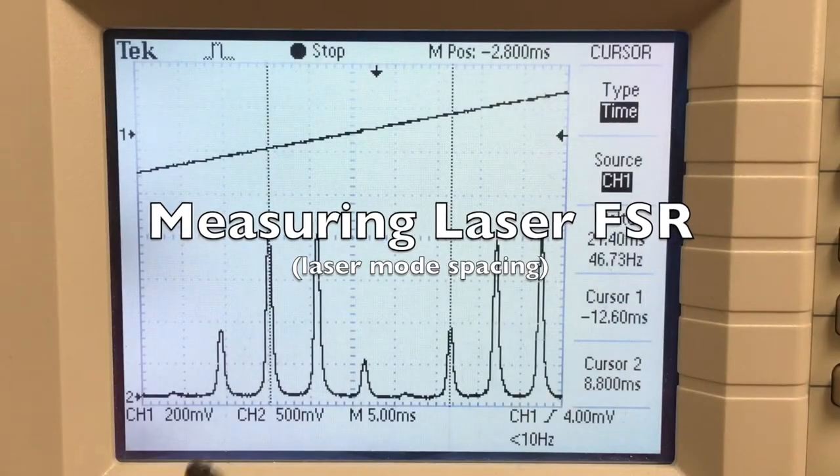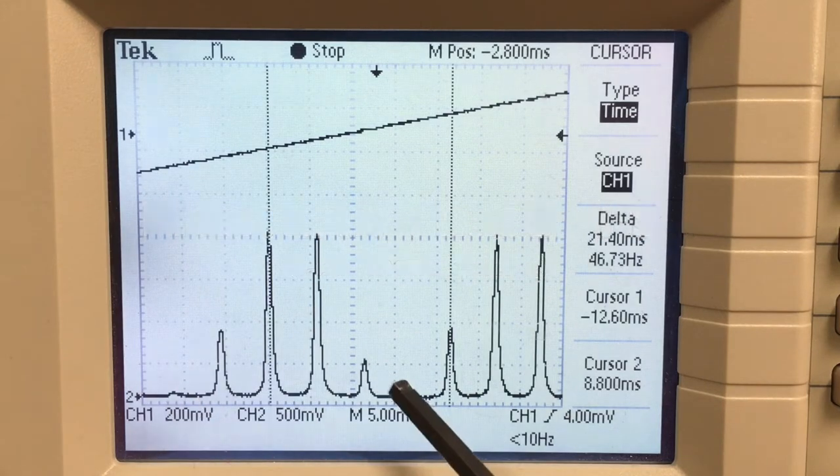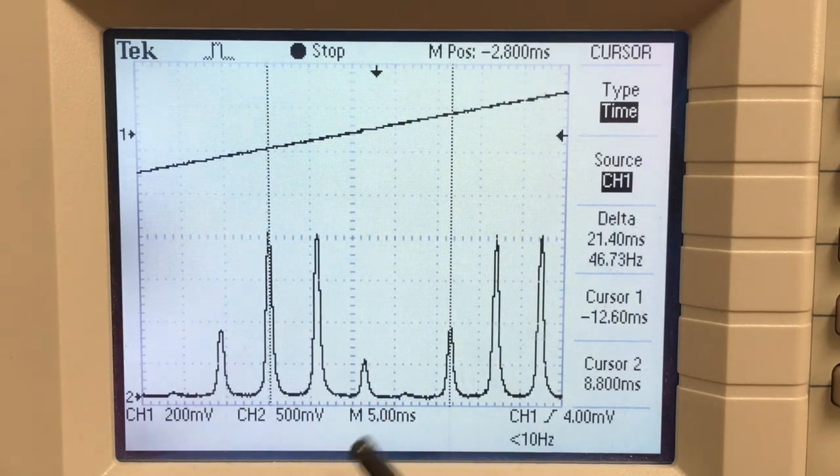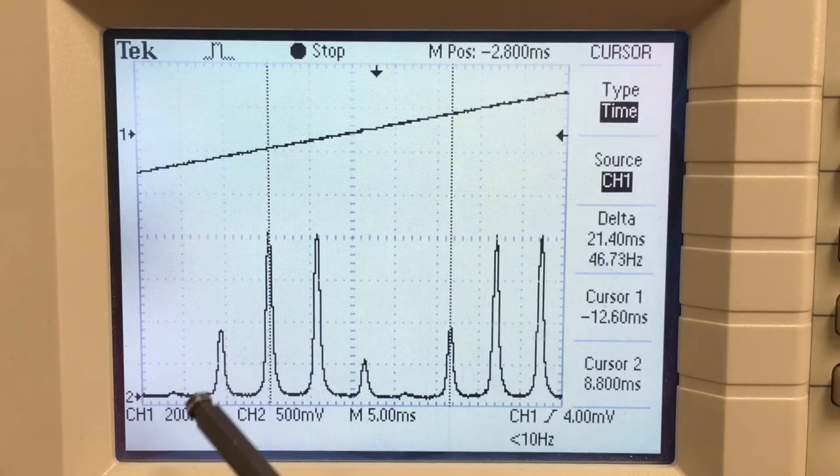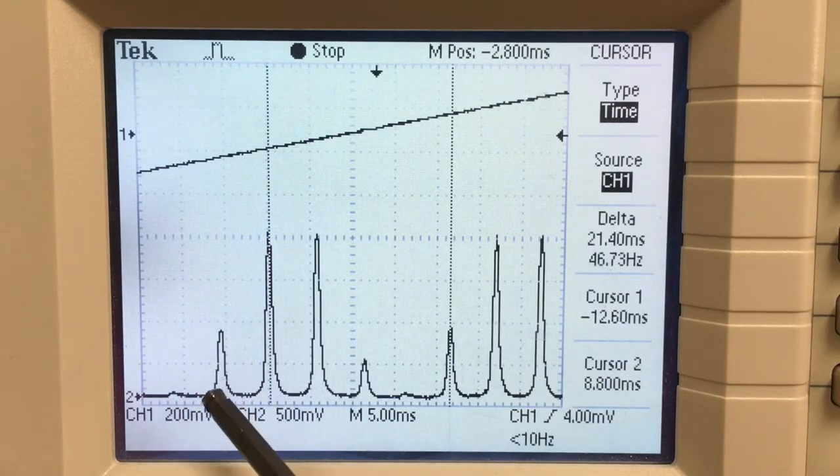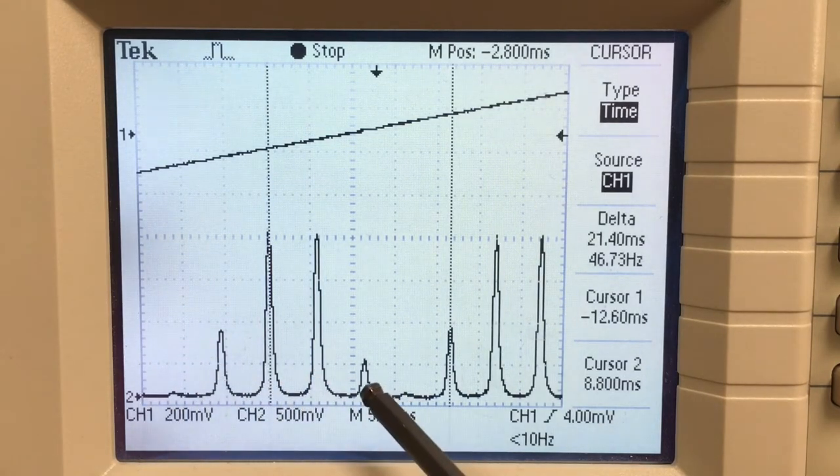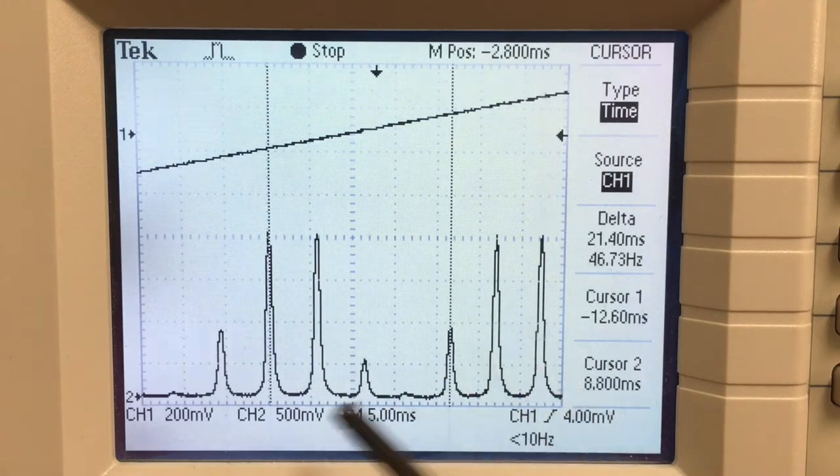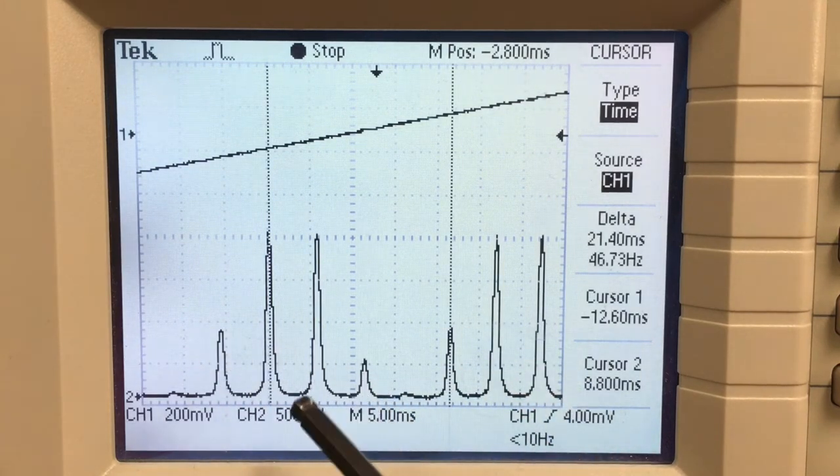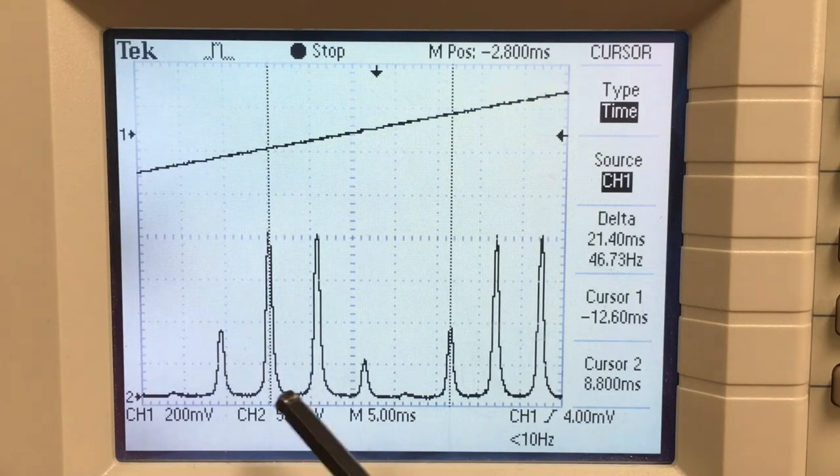Now let's look in detail at one scan of the resonant modes of our particular laser. It looks like the laser is actually putting out four or five different frequencies, and then the scan repeats again. So these four peaks correspond to the four different frequencies the laser is putting out.